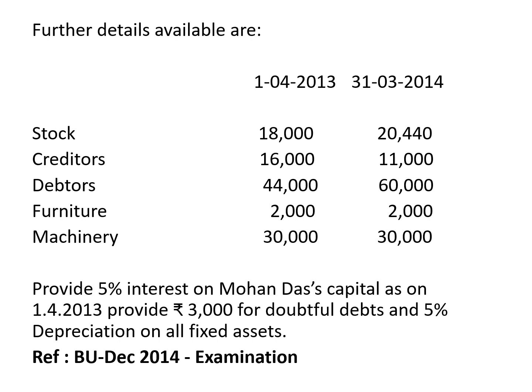This interest on capital should be added in the balance sheet when you adjust the capital. The next adjustment is to provide Rs. 3,000 for doubtful debts. This RDD of 3,000 should be taken to the P&L account credit side as 'to RDD' and the same should be deducted from the closing debtors in the balance sheet.